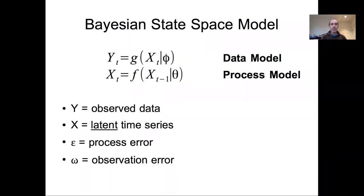In this lecture, we're going to continue our discussion of Bayesian state-space models. As a reminder, a state-space model is one where we separate the observations in a time series from the latent state that describes the time evolution of the process. We have a data model that represents the connection between the observed data and the latent state.